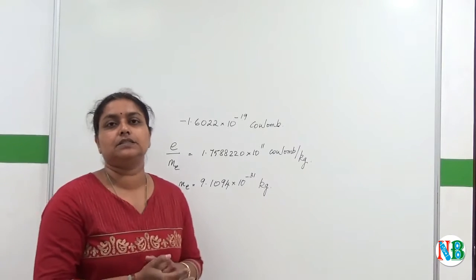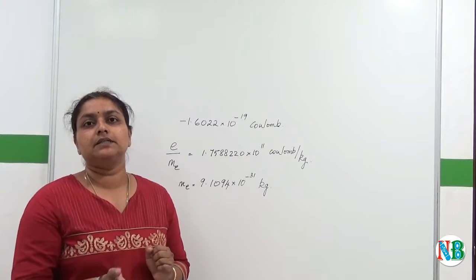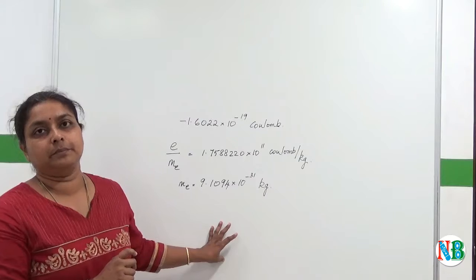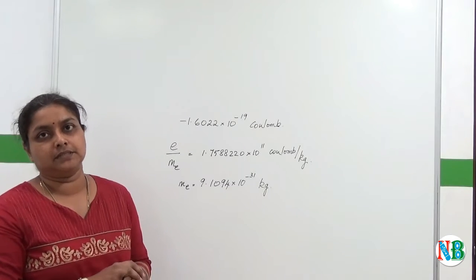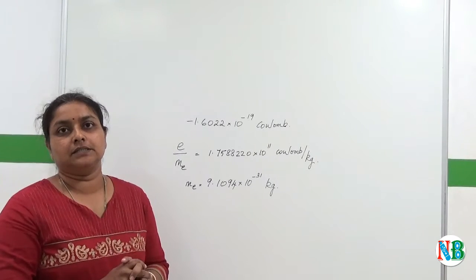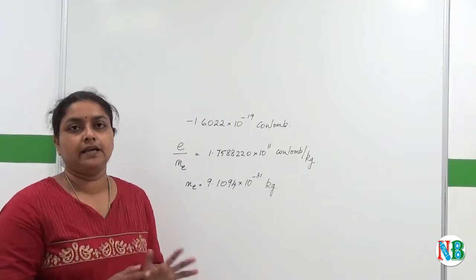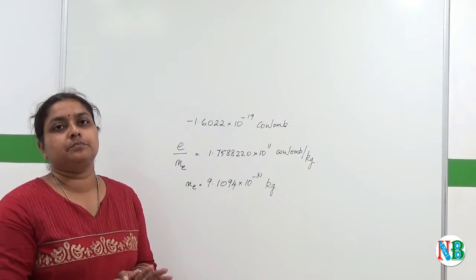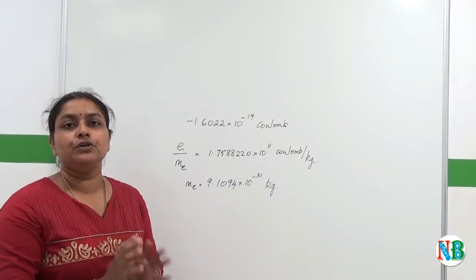In 1932, Chadwick conducted another experiment in which he bombarded a thin plate of beryllium with alpha particles. This resulted in the emitting of particles which did not have any kind of charge, neither negative nor positive. And these particles he named as neutrons.